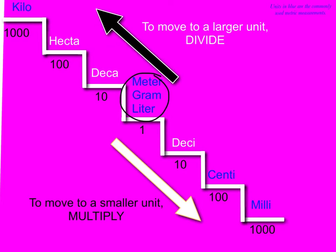So to move from meter to kilometer, you would need to divide because you are going up the steps. To move from gram to milligram, you are going down the steps, so you would need to multiply.